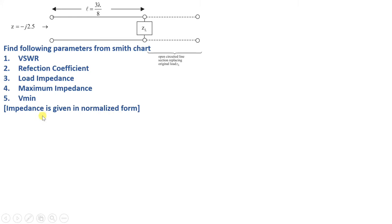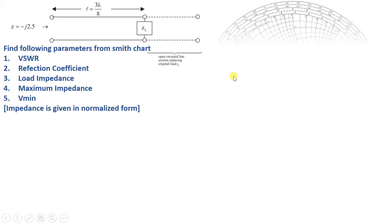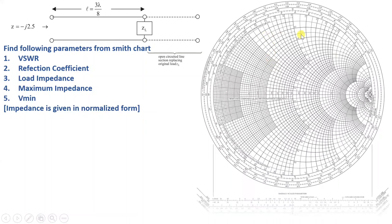Since the impedance is already given in normalized form, we do not need to translate it. Usually, if impedance is not given in normalized form, before placing points on the Smith Chart, we need to normalize those impedances by dividing by the characteristic impedance.